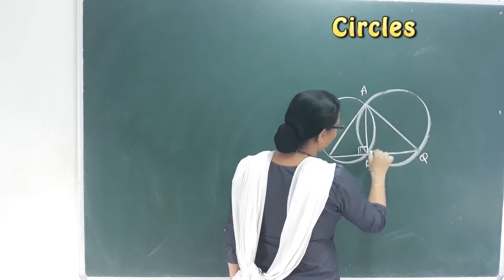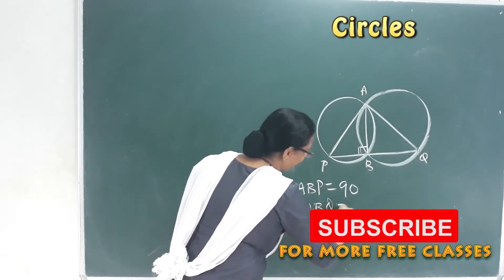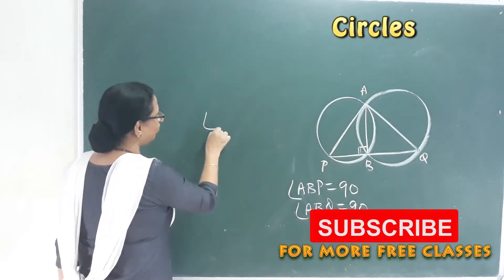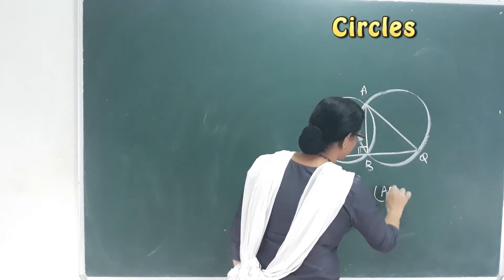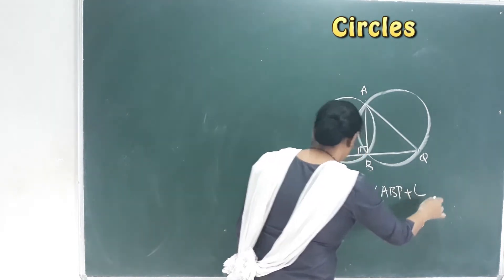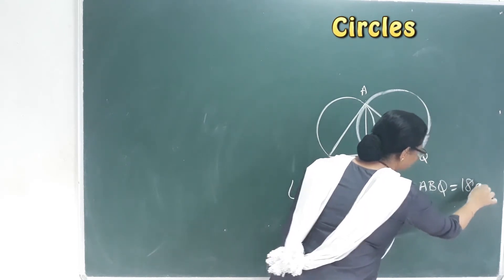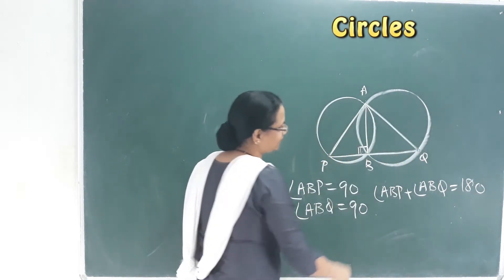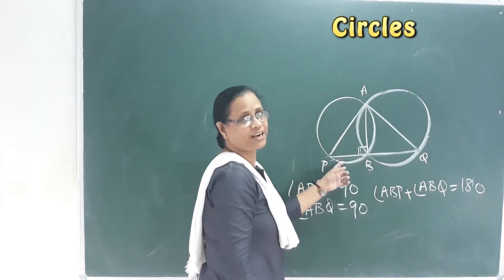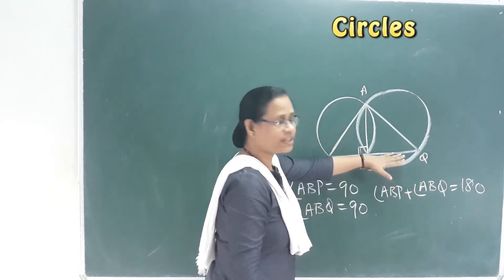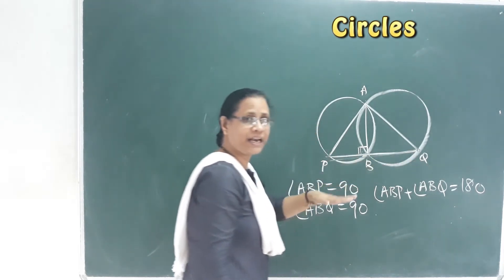Similarly, angle ABQ is 90 degrees. So angle ABP plus angle ABQ equals 90 plus 90 equals 180 degrees. Since 180 degrees is a straight angle, PBQ is a straight line.